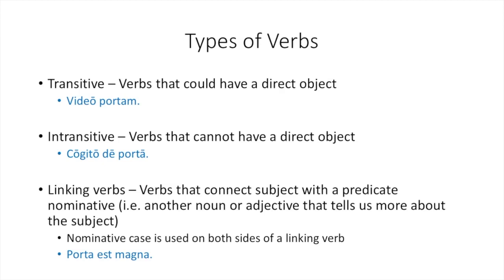You can think about something; you cannot think something. So you have to use your preposition de plus the ablative porta. Then there is another group of verbs: linking verbs. These are verbs that connect your subject with a predicate nominative. A predicate nominative is another noun or adjective that tells us more about the subject. We've already talked about this use of the nominative case by saying it is used on both sides of a linking verb. For example, porta est magna — the gate is large.